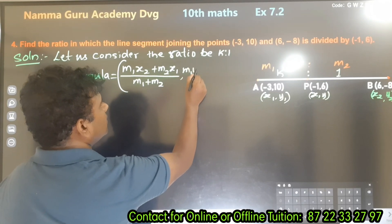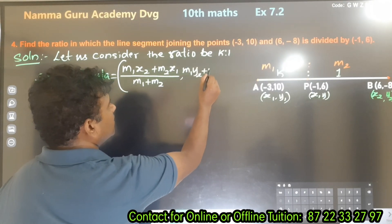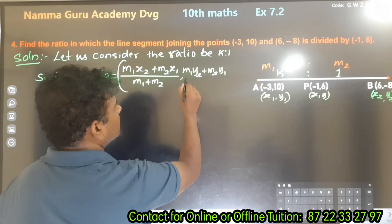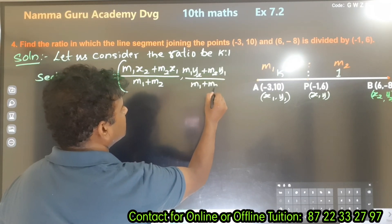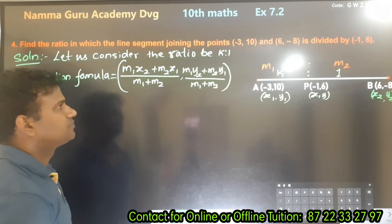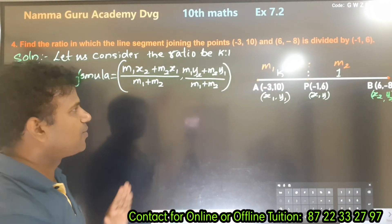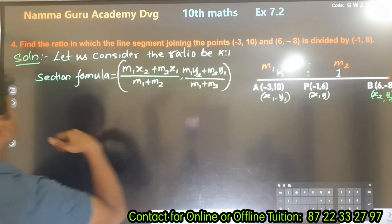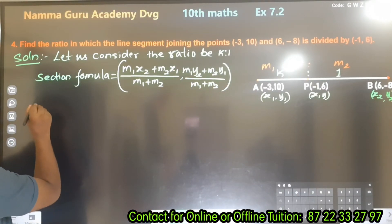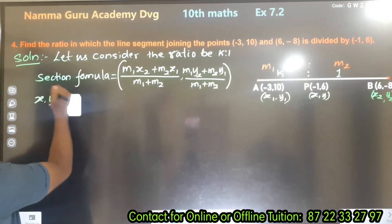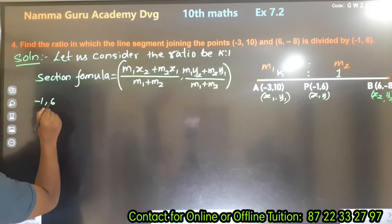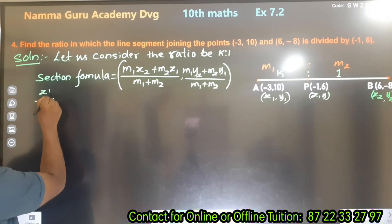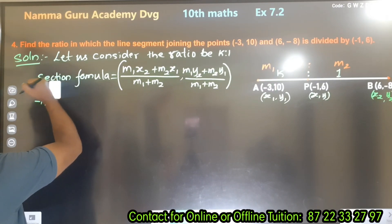Similarly, y = (M1 × y2 + M2 × y1) divided by (M1 + M2). Let us consider the ratio as k : 1.